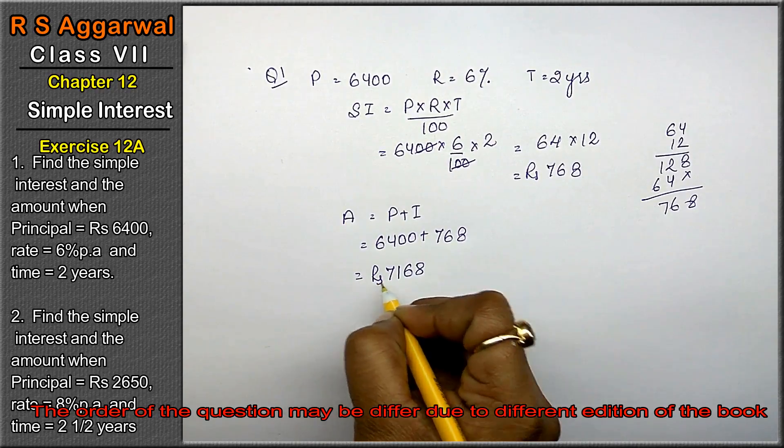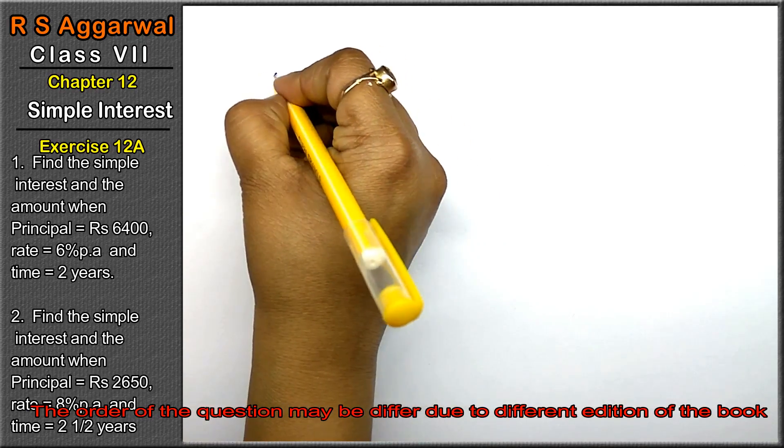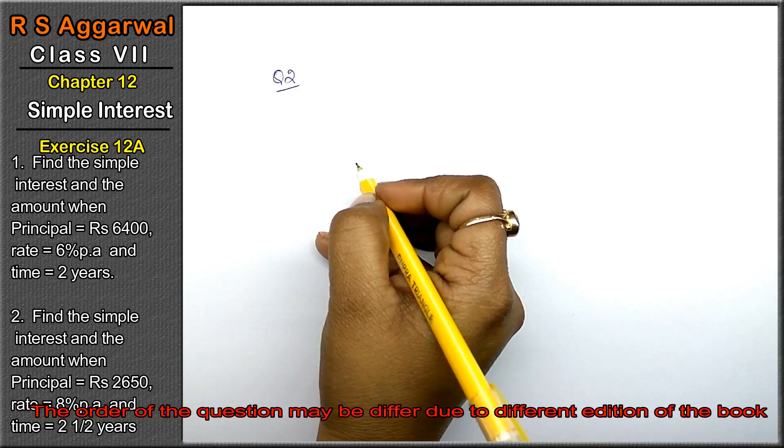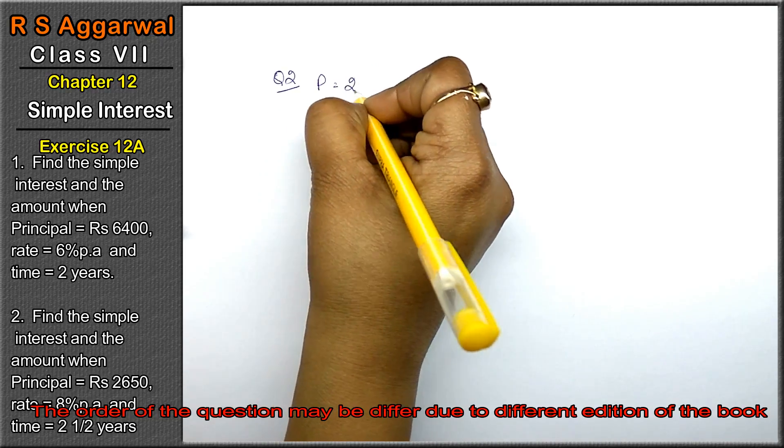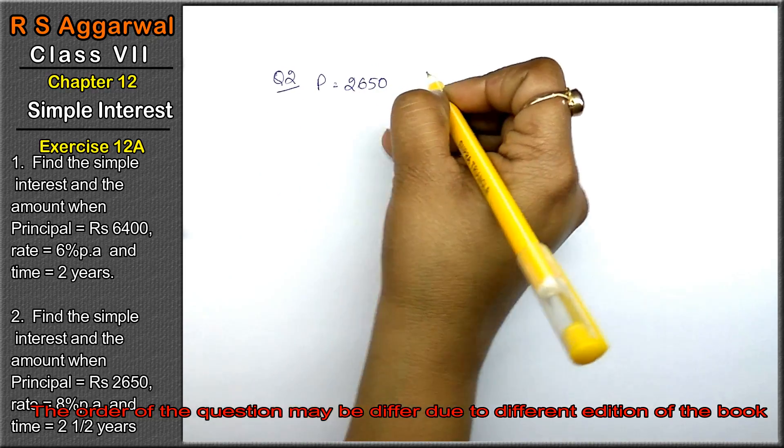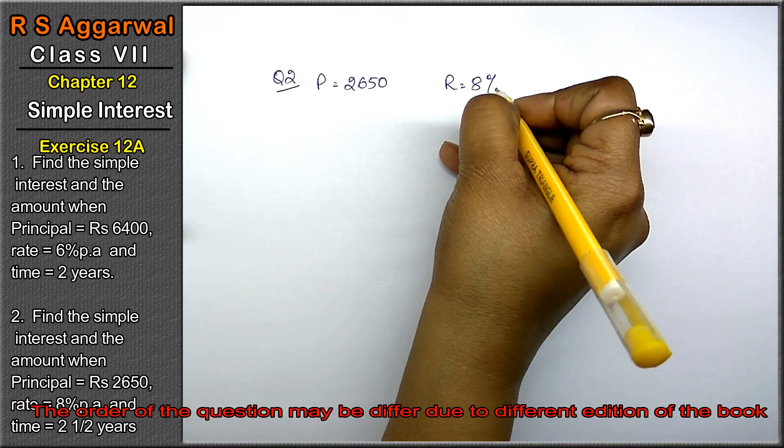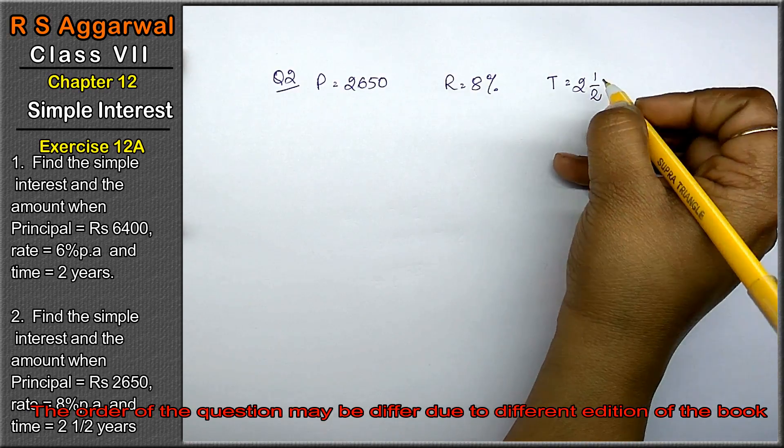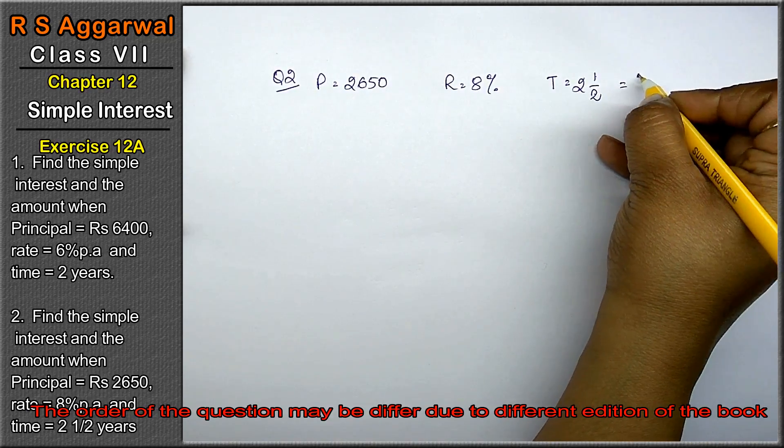Let's do question number second. Find the simple interest and the amount when principal equals 2650, rate equals 8% per annum, and time equals 2 whole 1 upon 2 years. We can write this as 5 upon 2 years.